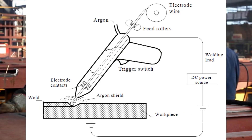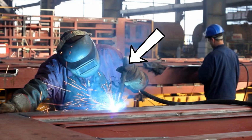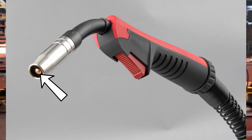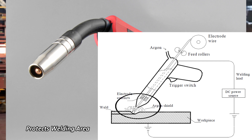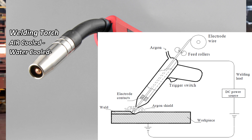The welding torch is slightly different from the one used in TIG welding. In this torch there is a mechanism which holds the wire and supplies it continuously with the help of the wire feed. The front end of the torch is fitted with a nozzle, which is used to supply inert gases. These gases form a shielding area around the weld zone and protect it from oxidization. The welding torch is air cooled or water cooled according to the requirement — water cooled for high current supply and air cooled for low supply.